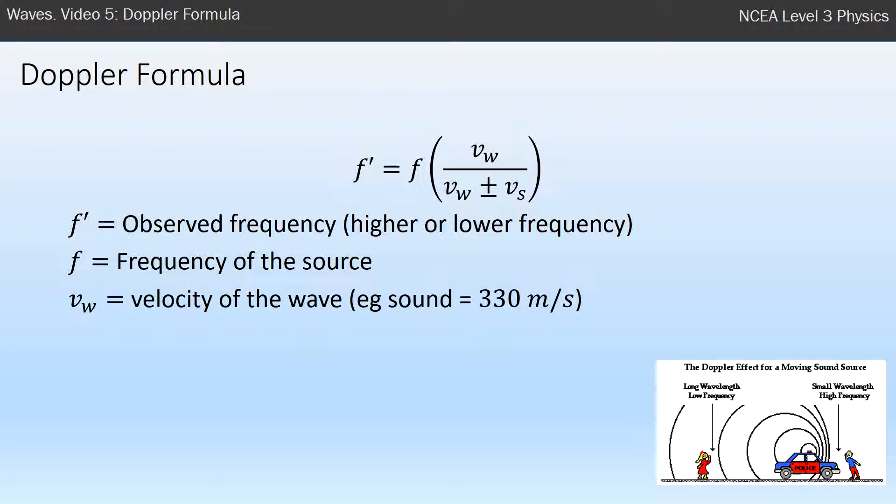V subscript W, so remember subscripts are labels, so it's velocity and the W stands for wave. So the velocity of the wave, for sound it's about 330, but that can change depending on if it's hot air or different air density, but they usually give you that value there. And Vs is velocity of the source, how fast the car is moving, for example.